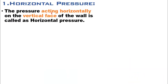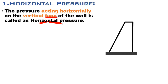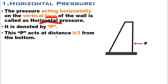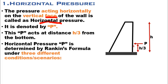Horizontal pressure is the pressure acting horizontally on the vertical face of the wall which is facing the retained material. This is the typical cross-section of the retaining wall. It is denoted by P, and P acts at a distance H/3 from the base of the wall, where H is the total height of the wall. Horizontal pressure P is determined by Rankine's formula.